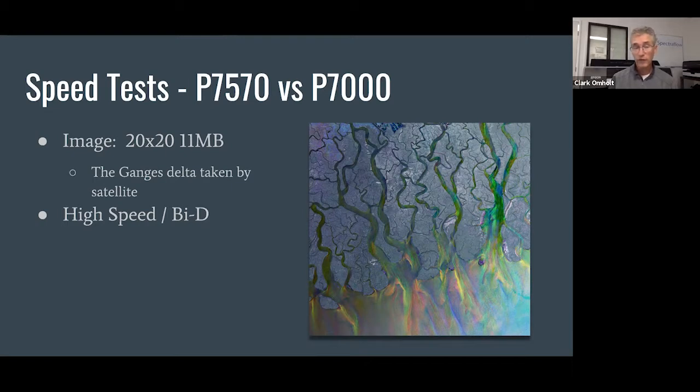The P7000 is still available and there's a slight price differential, so is it worth paying extra for the 7570? Speed is one of the things I was curious about.